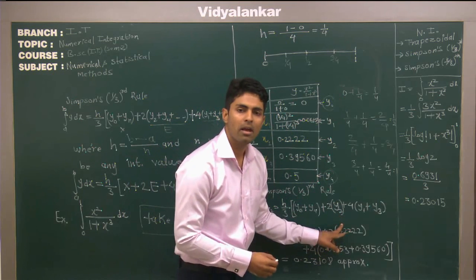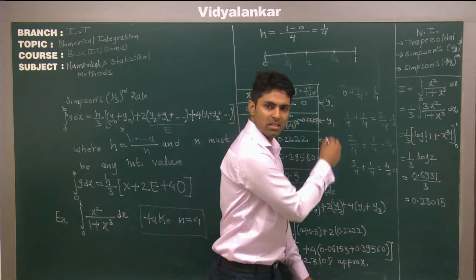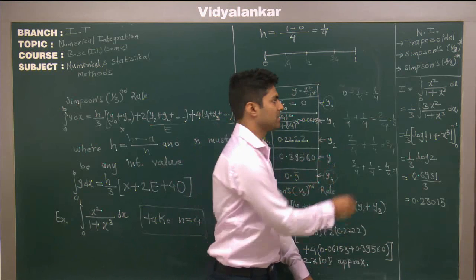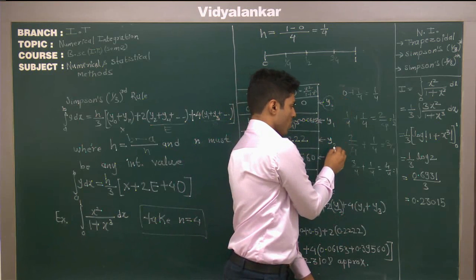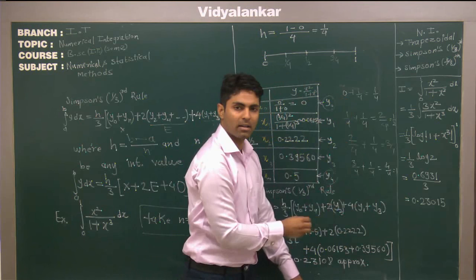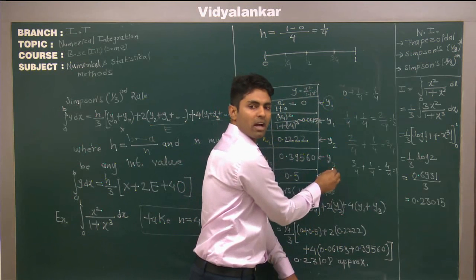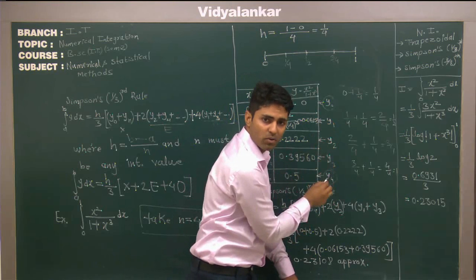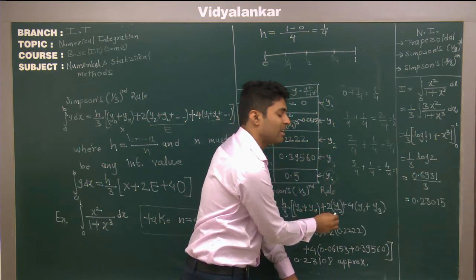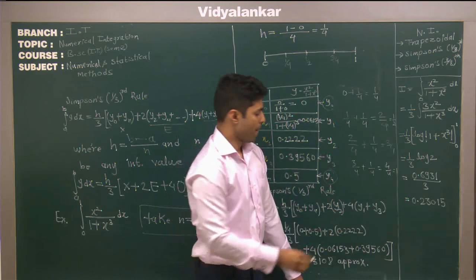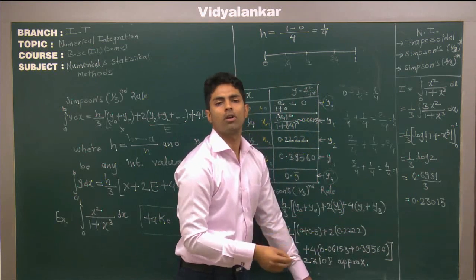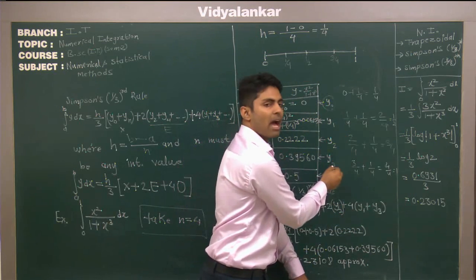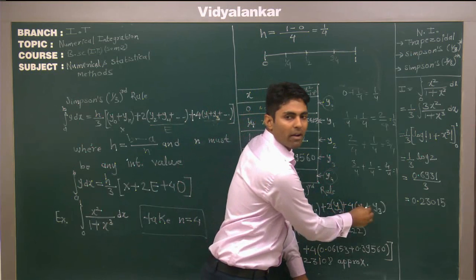Why I have taken y2 only? Because in this order the even order is y0, y2 and y4. But y0 and y4 comes in an extreme value, that's why we have not taken y0 and y4. We have directly taken y2. Plus what is the odd order? It's y1 and y3. So 4 times y1 plus y3.